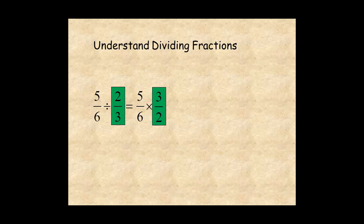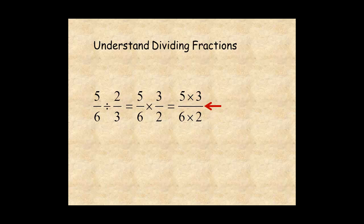Then multiply the numerators and denominators for five times three over six times two. You get fifteen over twelve, which is the quotient.